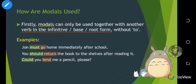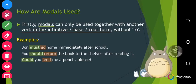So let's look at examples of how modals are used. 'John must go home immediately after school' — the modal here is 'must'. 'You should return the book to the shelves after reading it' — the modal is 'should'. 'Could you lend me a pencil please?' — the modal is 'could'. You realize that wherever there is a modal, there is also a verb, because the modal gives more information on the verb.